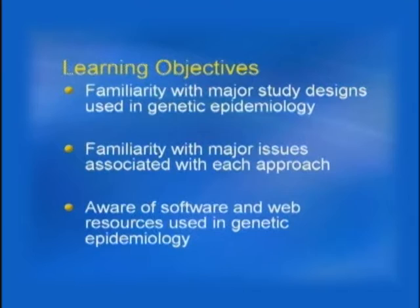The learning objectives are three broad goals. First, I'd like everyone to be familiar with the major study designs used in genetic epidemiology. Second, to be familiar with the major issues associated with each approach — what are the limitations, what are things you need to think about, and how do you interpret the results? Frequently, results from genetic epidemiology studies are not interpreted correctly, and that causes a lot of problems. And finally, to be aware of the software and web resources available in genetic epidemiology. You should leave here with a good understanding of the basic skills required of a genetic epidemiologist.